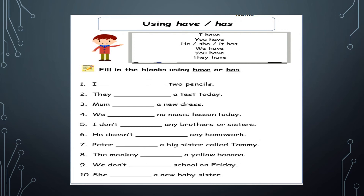I don't have any brothers or sisters — we use have with I. He doesn't has any homework. Peter has a big sister called Tammy. The monkey has a yellow banana — here again, monkey is a singular noun, that's why we are using has with it.